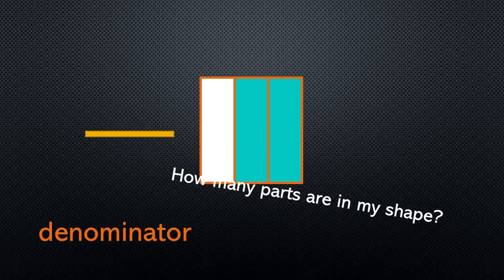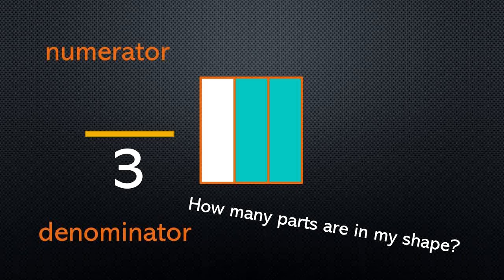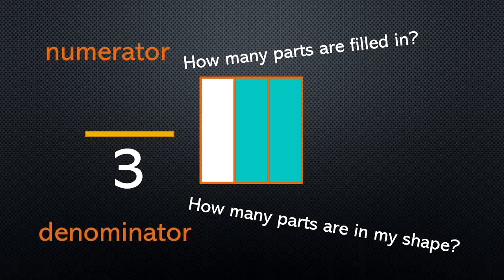Here's our next shape. This time, I've filled in two sections, but there are three total. Let's think about where we are going to put these numbers on our fraction. Remember, the denominator goes on the bottom — that's saying how many parts are in my shape. How many parts are in this shape? One, two, three. Three goes on bottom. And the top is the numerator — that's showing how many parts are filled in. We filled in two. The way we read this fraction is two-thirds. There are two parts filled in out of three. Two-thirds.